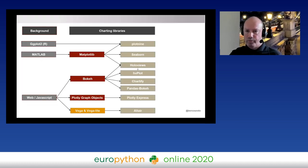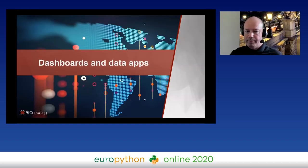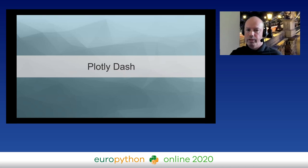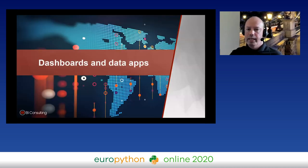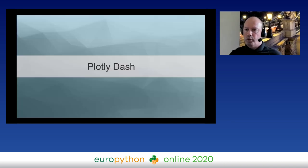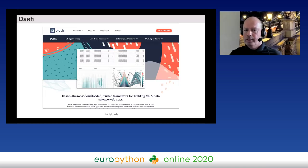That's the final version of the charting libraries section. We have four major ways of creating charts: the Matplotlib family, the Bokeh family, the Plotly family, and Altair. But sometimes you need more than just charts — you want to build dashboards or data apps with multiple charts, interactive controls, and the ability to run code and update results. There are four options for that.